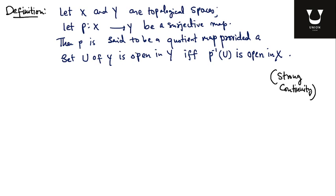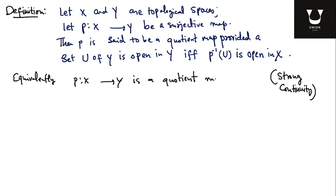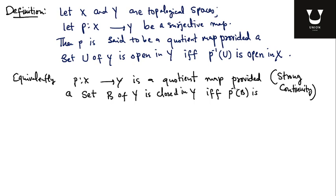An equivalent definition is obtained by replacing 'open' with 'closed': p is said to be a quotient map provided a subset b of y is closed in y if and only if p inverse of b is closed in x. You can prove that one definition implies the other, so these are equivalent definitions of a quotient map.